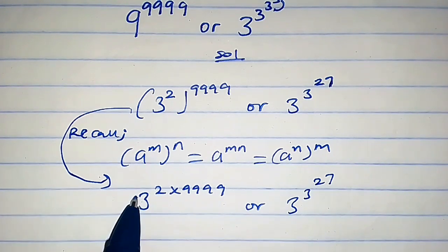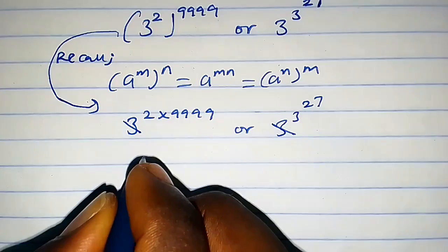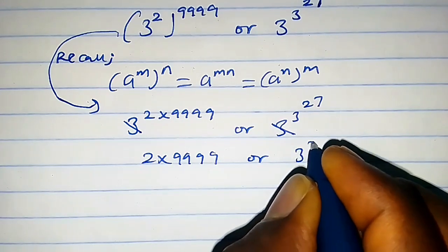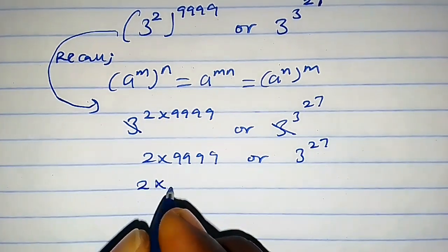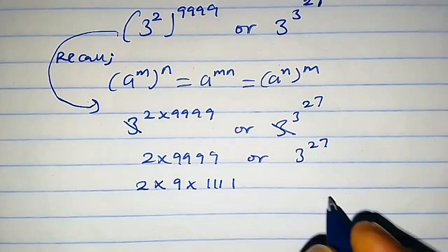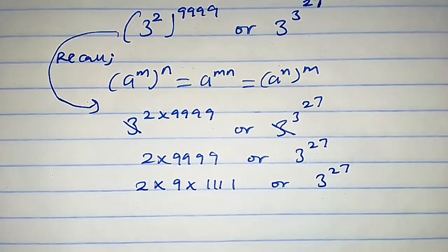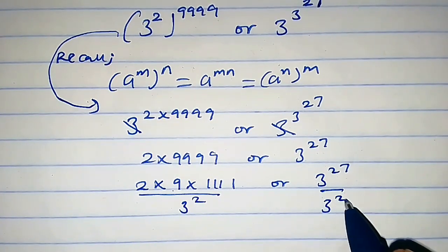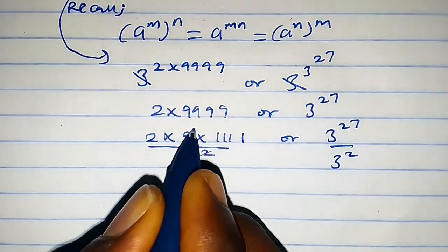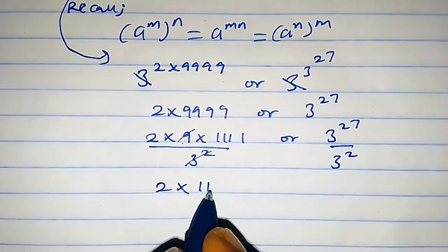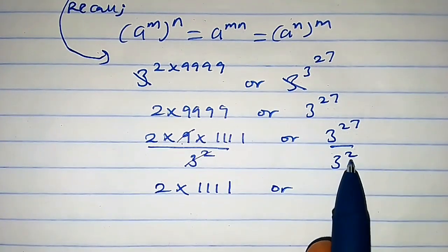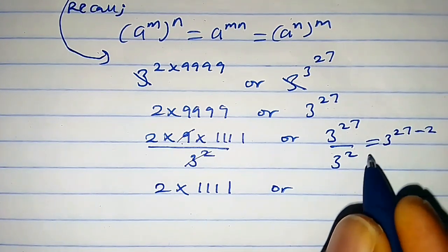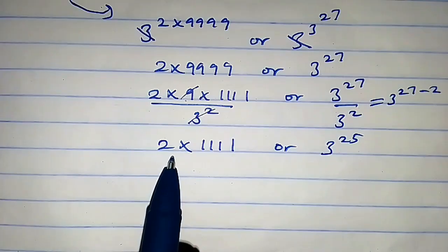The base is the same here, so let's ignore the base and focus on the exponents. We have 2 times 9^9^9^9, or 3 raised to the power 27. This can also be written as 2 times 9^9^9^9, or 3^27. Dividing both sides by 3 squared, 3 squared cancels with 9, giving us 2 times 9^9^9^9, and on the other side 3 raised to the power 27 minus 2, which is 3^25.